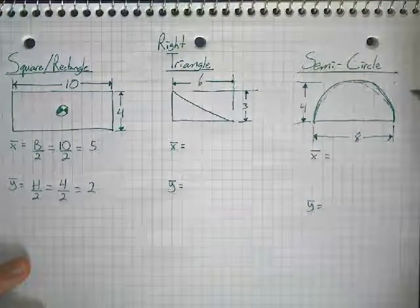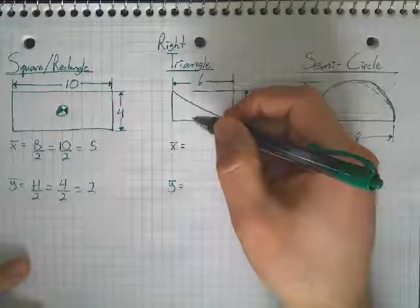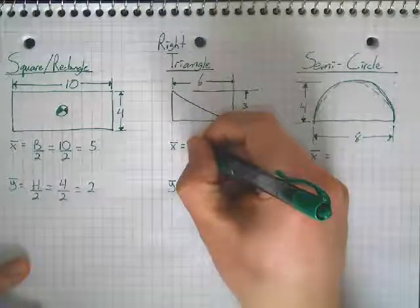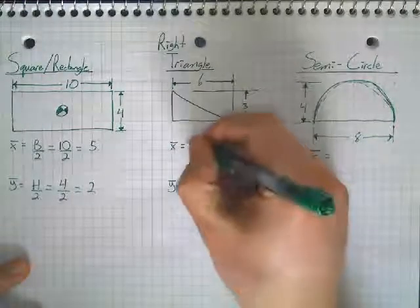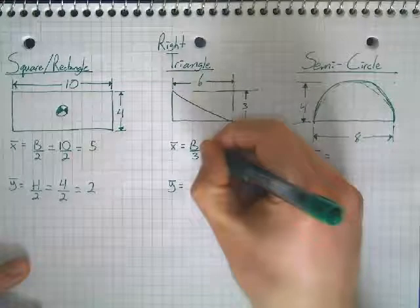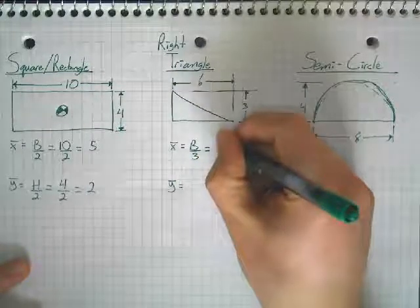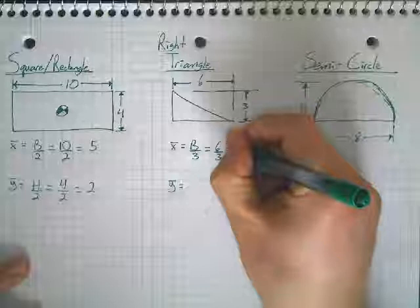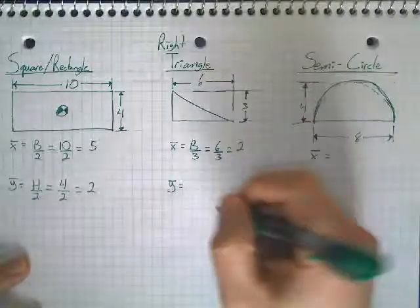So, if it's a right triangle, I look at my base first, and so for x-bar, it is base divided by three for a triangle. So, if I plug in my base value, I have six over three, and that would be equal to two then for my x-bar.